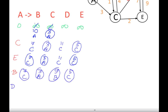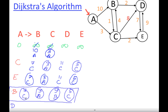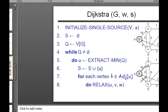Next we pick D with weight 9. From D we could go to E, but E was already picked as a minimum, so we don't update it. All previously picked nodes are already finalized. This is the final shortest path. Always record the parent or predecessor of each node, as that determines the actual shortest path.